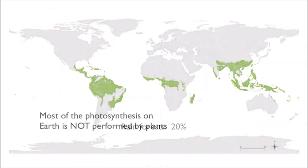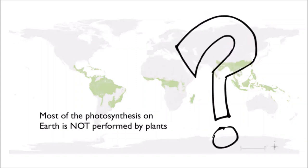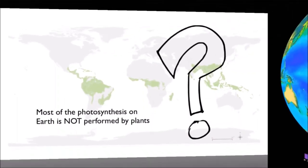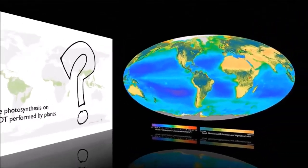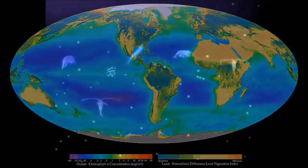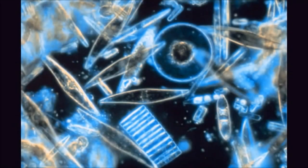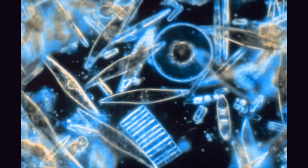But most of the oxygen was not made by plants at all. So who is doing all the photosynthesis? It's happening in the oceans, by little tiny microscopic organisms called phytoplankton — all these little green blobs. If you blow them up, they're actually really pretty. Phytoplankton!